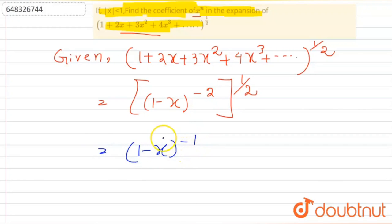So if we expand this, then we will get 1 + x + x² + x³ and so on. Therefore, the coefficient of each term here is 1.